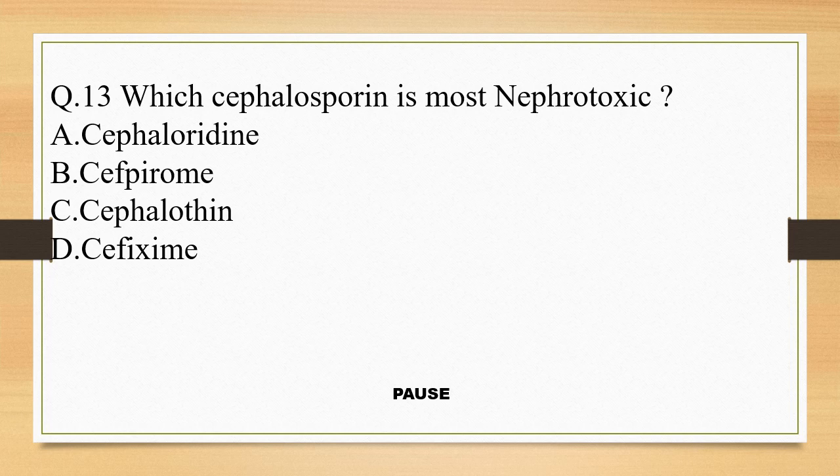Question 13. Which cephalosporin is most nephrotoxic? Option A, Cephaloridine; option B, Cefpirome; option C, Cephalothin; and option D, Cephazine. And the right answer is option A, Cephaloridine.